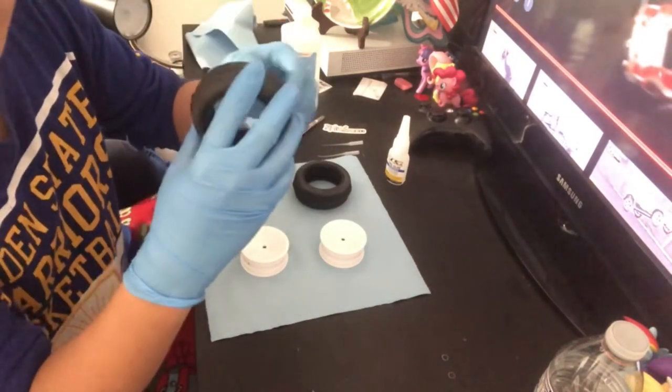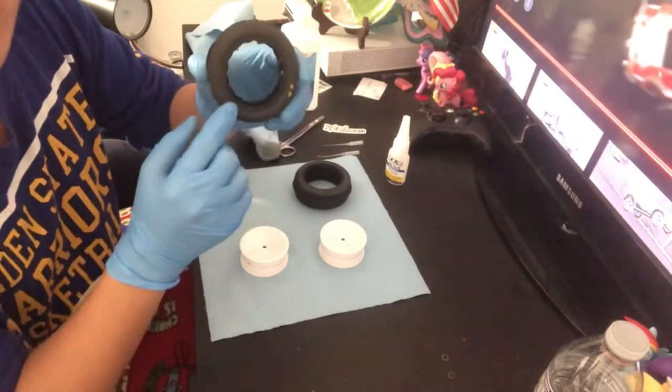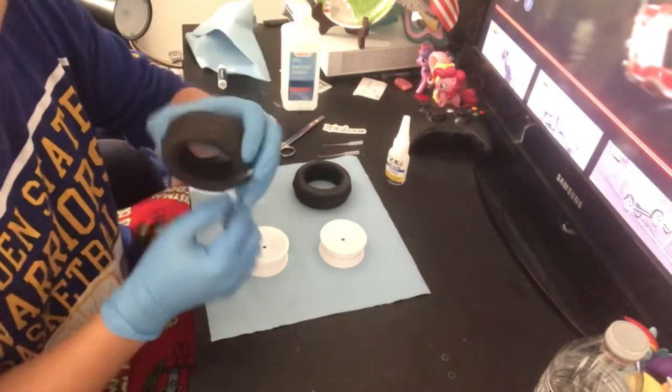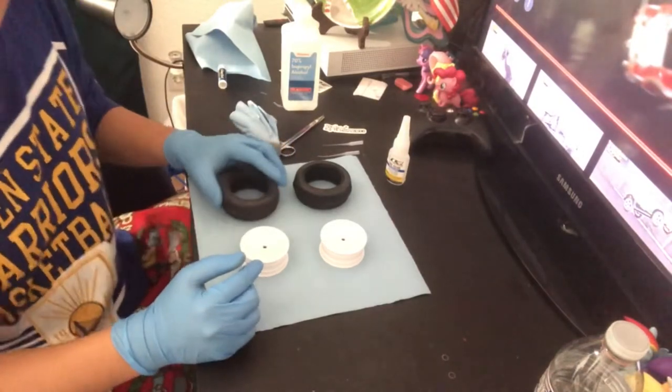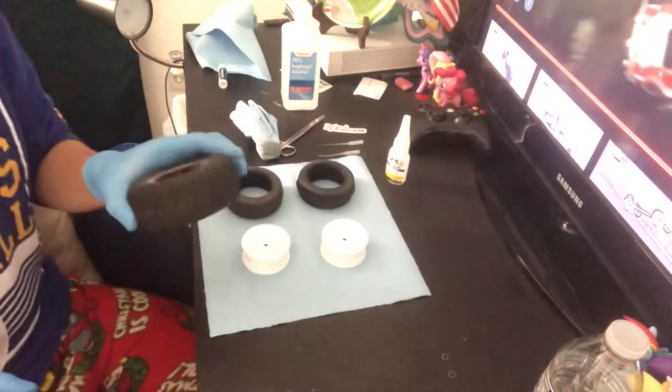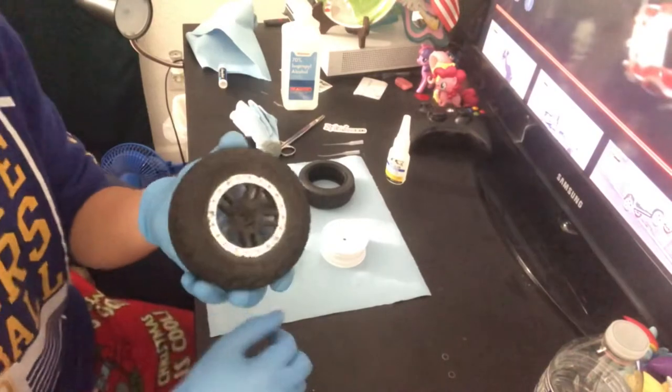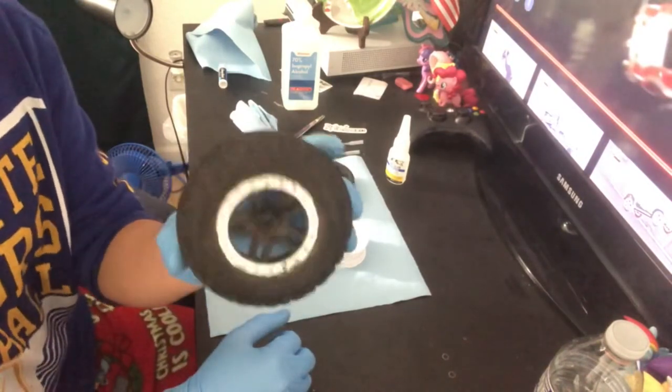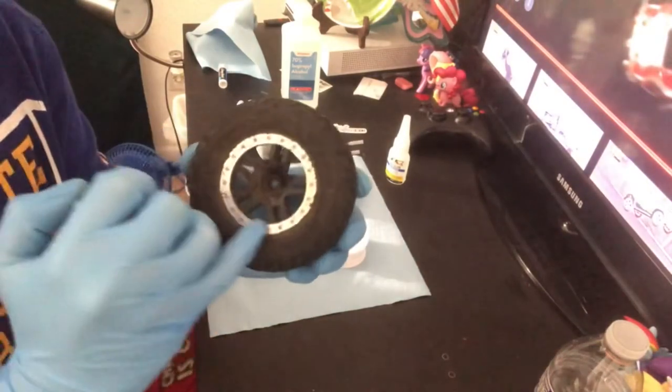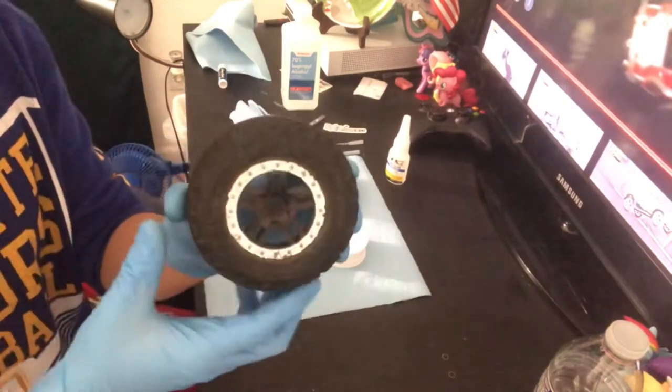The other bead is usually larger. Let me go grab one of my Traxxas Slash wheels and tires and I'll show you what I mean. Here is my Traxxas Slash wheel. As you can see, this bead right here is smaller, but if we flip it over, this one is bigger.